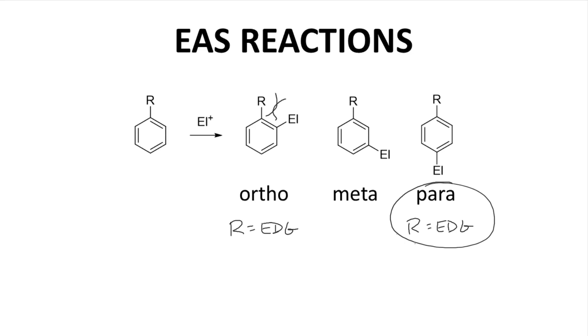If the R group is an electron withdrawing group, the carbocation intermediates leading to the ortho and para products are destabilized, and the meta regioisomer is favored.